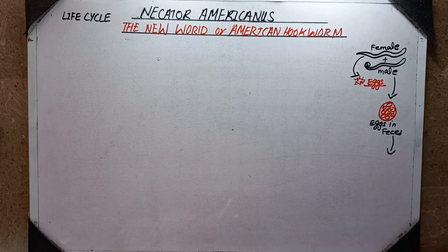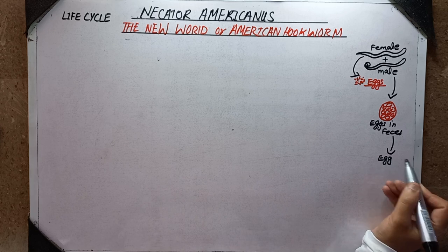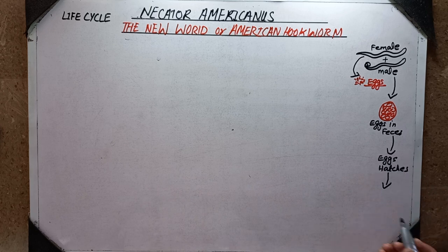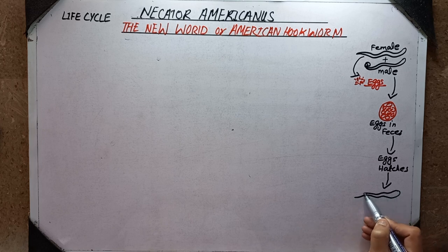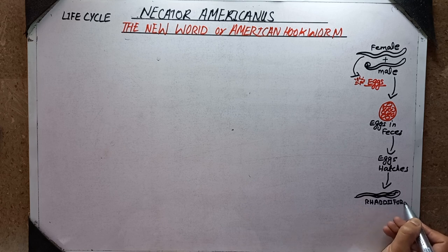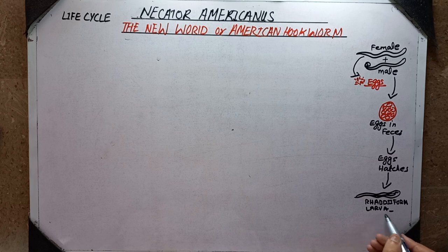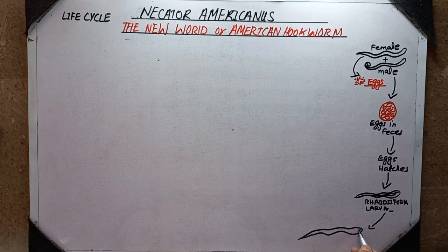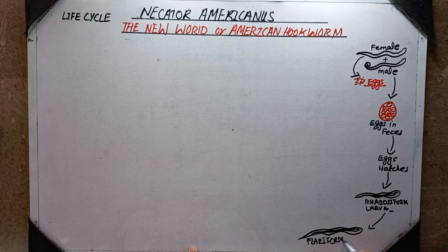The eggs are found within the feces in the external environment. These eggs hatch and release a small-sized larva called the rhabditiform larva. This rhabditiform larva is the second stage larva of the hookworm. It then molts and develops into another larval stage called the filariform larva, which is the third larval stage of the hookworm.